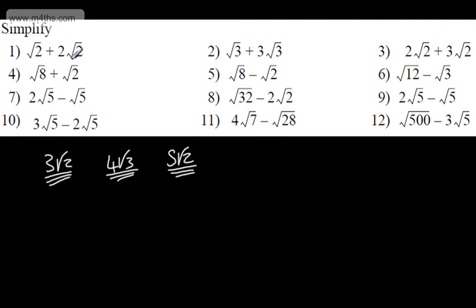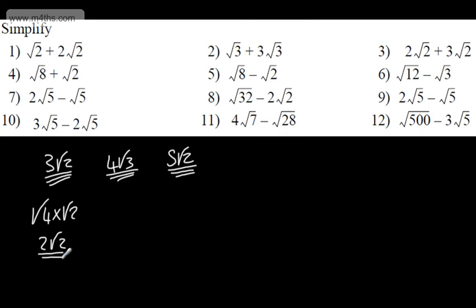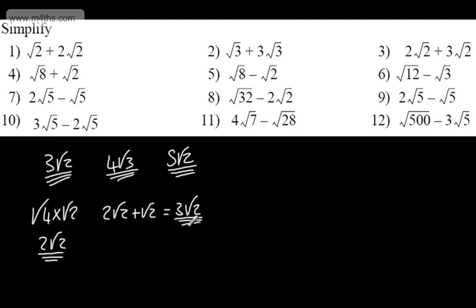Initially it doesn't look like we can add these because we don't have like surds. But as we've seen in previous videos, we can simplify the root of 8. We could write root 8 as root 4 multiplied by root 2, which gives me 2 root 2. If that doesn't seem familiar, please go back and check the previous videos. So instead of root 8 plus root 2, we've got 2 root 2 plus 1 lot of root 2, which gives me 3 lots of root 2.